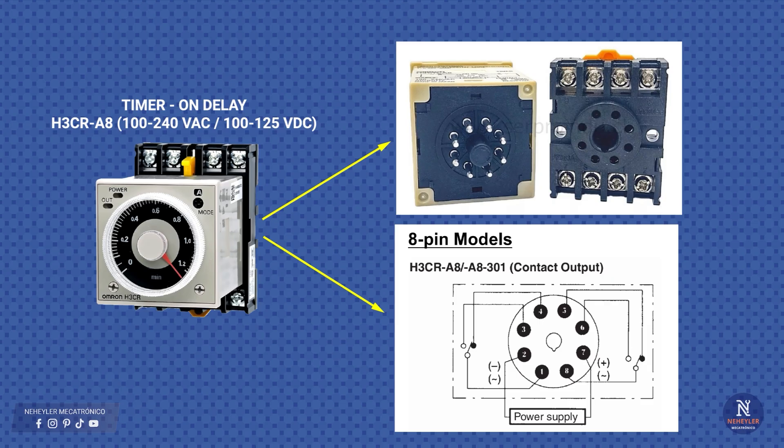For this project we are going to use this timer model, H3CR-A8 on delay. This type of timer needs a special base to be mounted on a DIN rail, which makes installation in electrical panels easier. At the bottom we see the electrical diagram according to the manufacturer's datasheet, where its 8 pins and the function of each one are clearly indicated. It is important to mention that if you decide to use another timer model or brand, you must always check its technical data and connection diagram, since the pin and contact arrangement may vary.